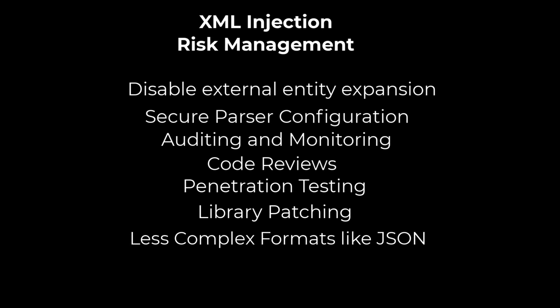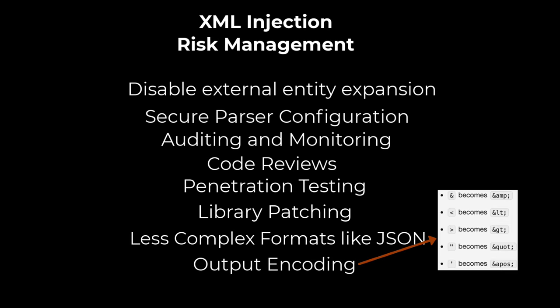Using less complex data formats like JSON can reduce the risk of XML injection attacks, as JSON is less prone to injection attacks due to its more straightforward structure and lack of support for external entities. Employing output encoding is another crucial strategy — by encoding user input before incorporating it into XML documents, developers can neutralize any input that might be interpreted as XML elements, ensuring that user input is treated as data rather than executable code.